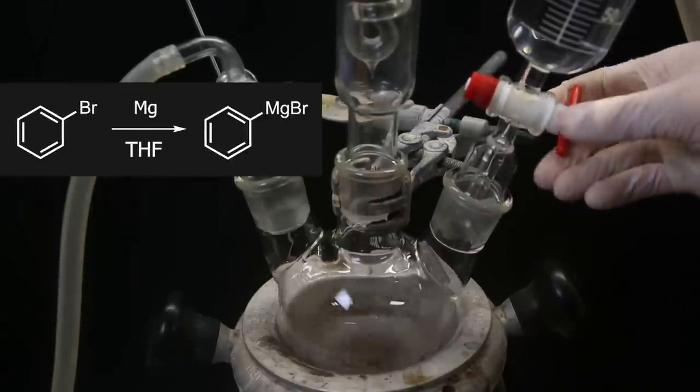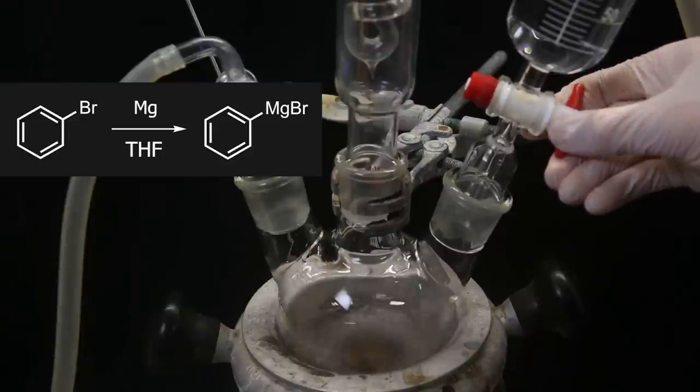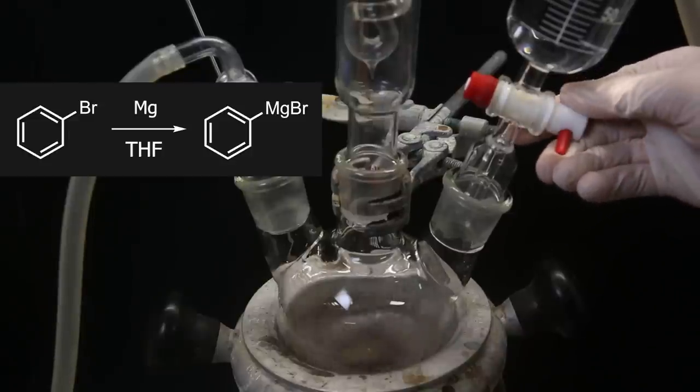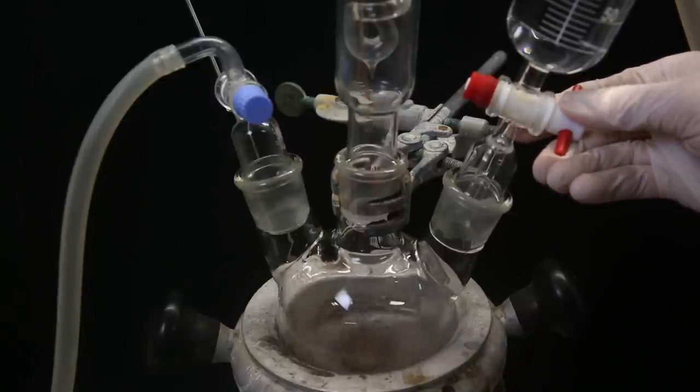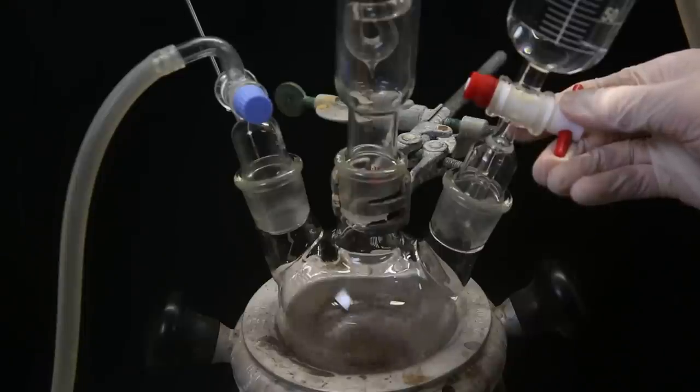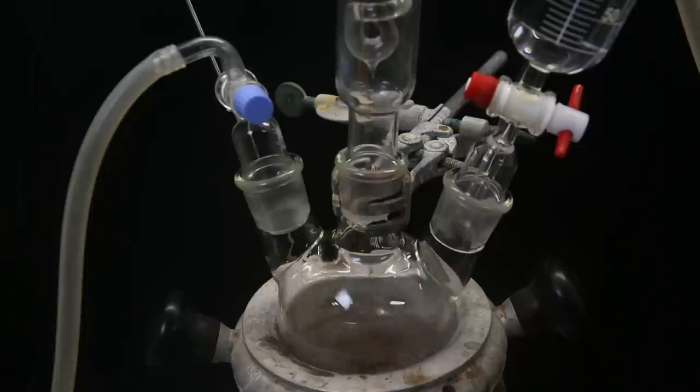In the reaction, the bromobenzene will react with the exposed magnesium, to form the Grignard reagent phenylmagnesium bromide. The reaction generates some heat, but it doesn't really boil that much compared to when you would use diethyl ether.